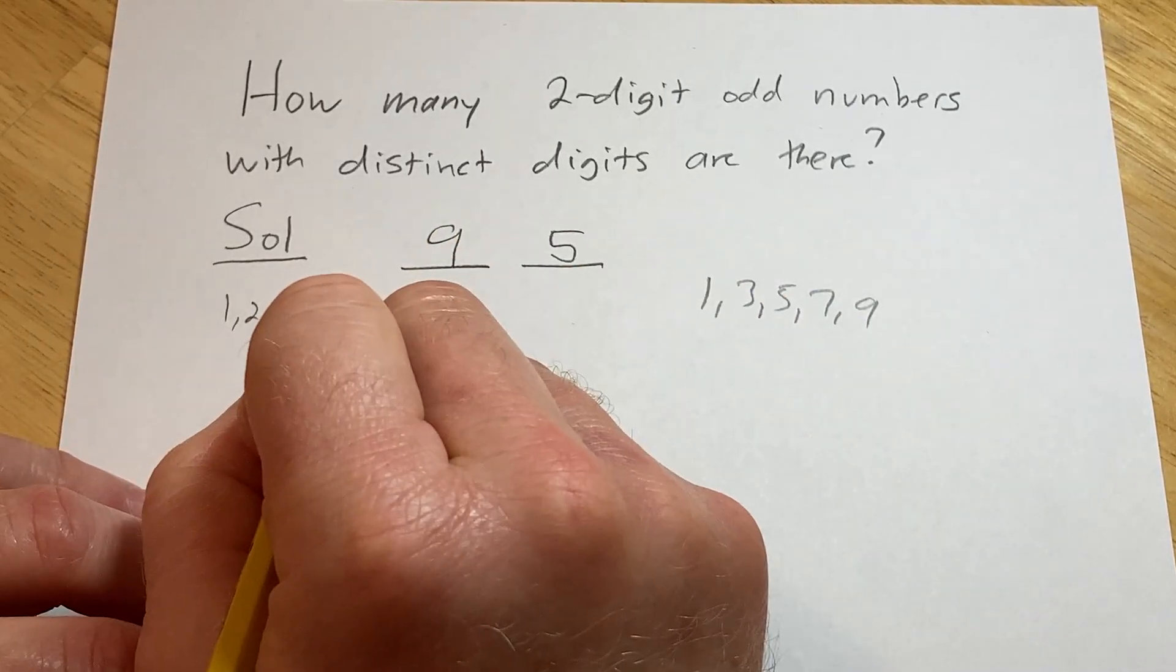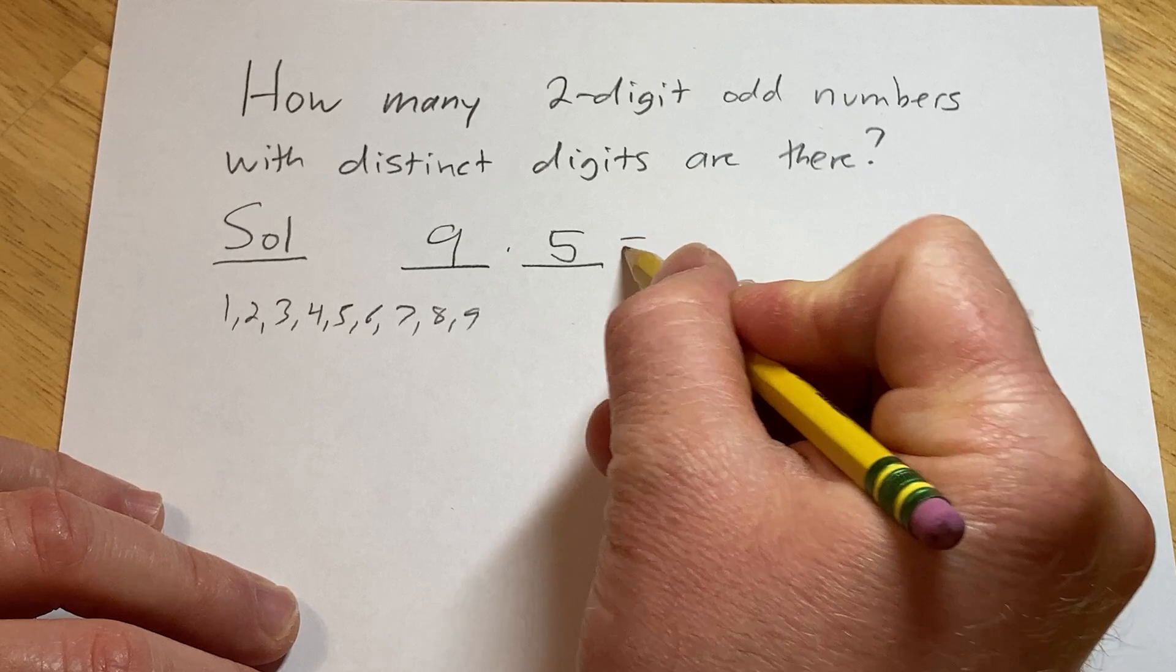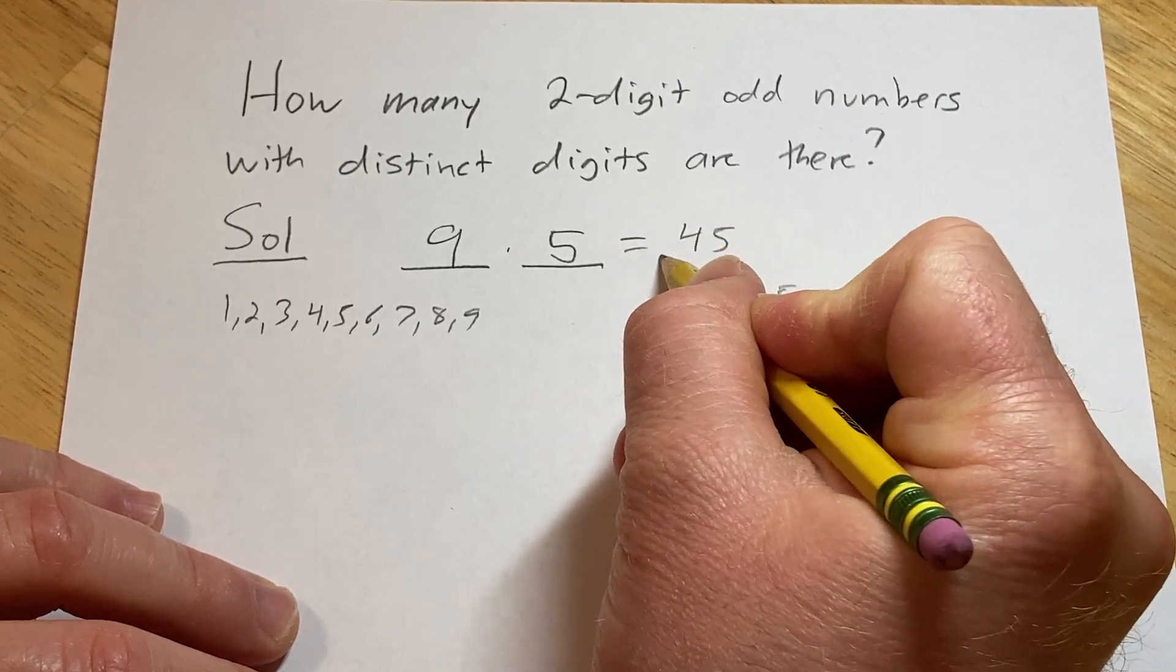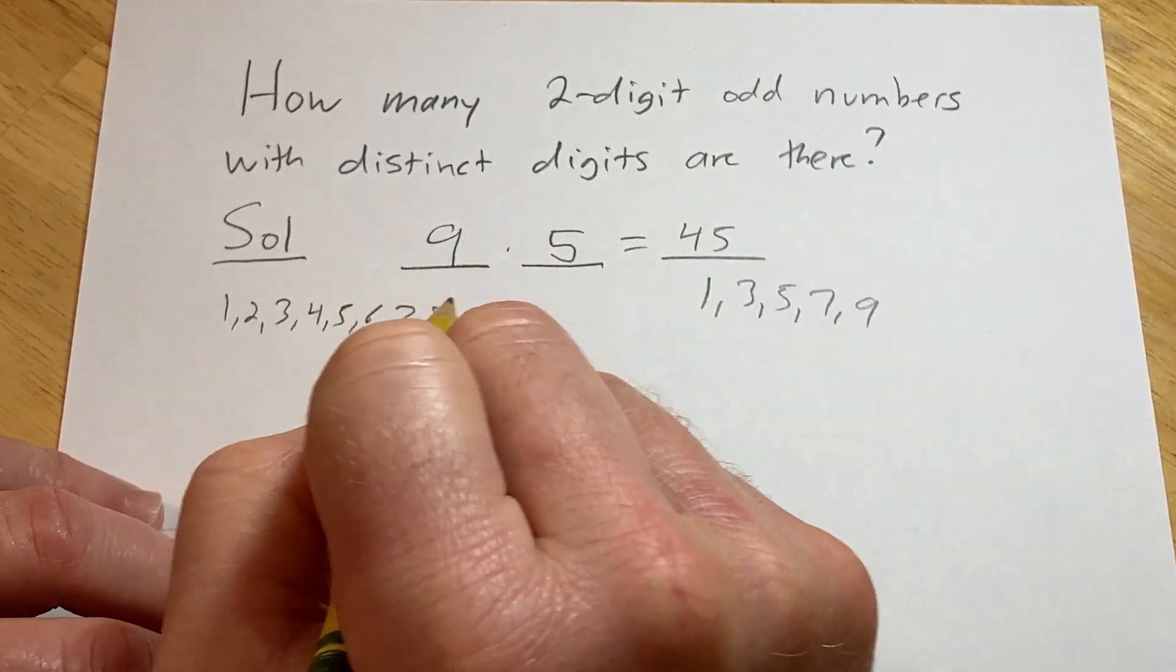So the number of two-digit odd numbers is the product, 9 times 5, which is 45. So there's 45 two-digit odd numbers.